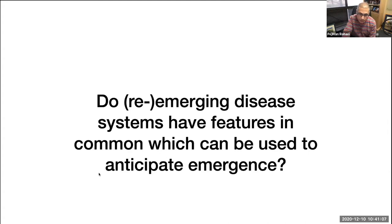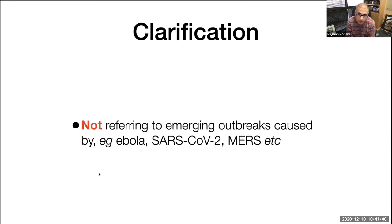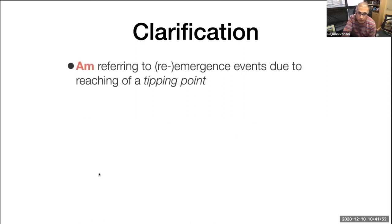Right at the beginning, I want to put a disclaimer: I'm really not talking about infectious diseases like Ebola, SARS-CoV-2, or MERS, because these are infectious diseases that are human-transmissible when they spill over. Predicting their emergence is tantamount to predicting the spillover event, which at the moment we can identify risk hotspots for, but predicting the actual event is beyond our capability. What I am talking about are emergence or re-emergence events that are due to the approach to a tipping point in a mathematical sense.